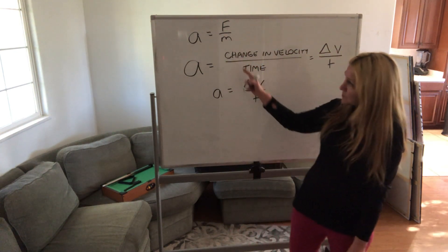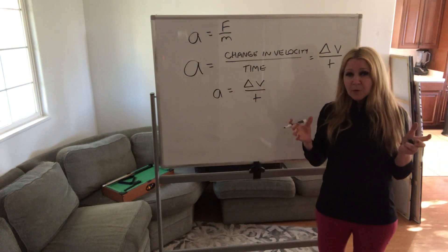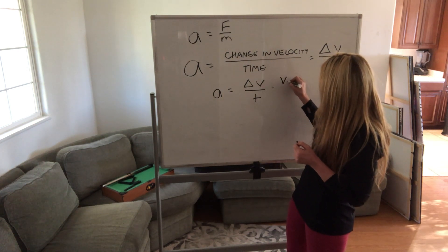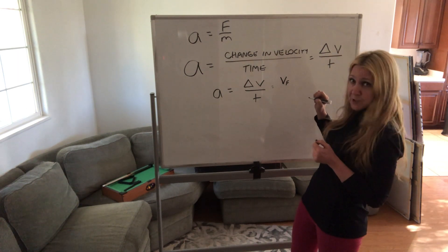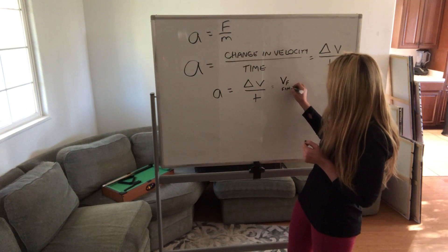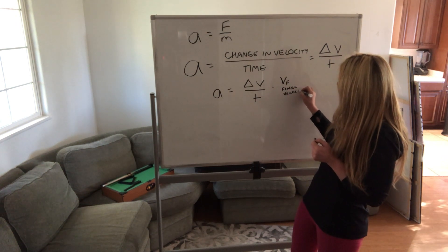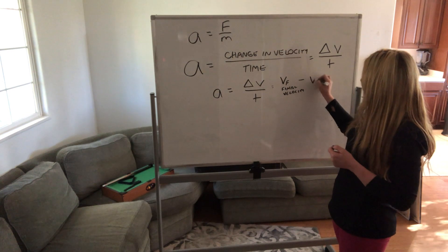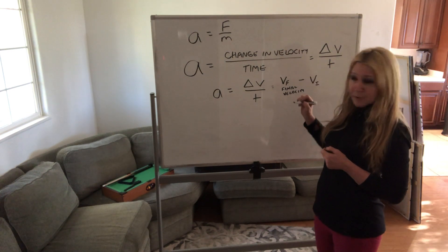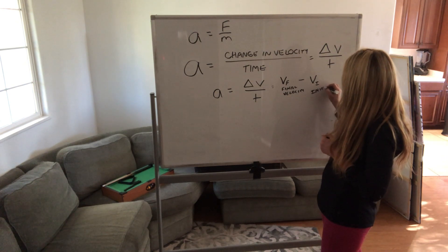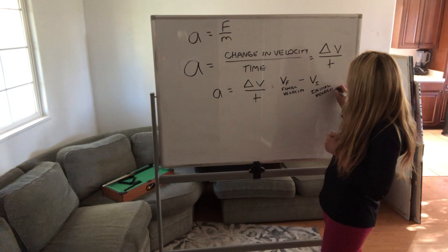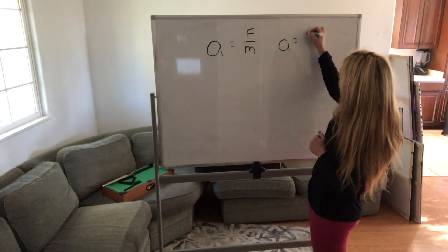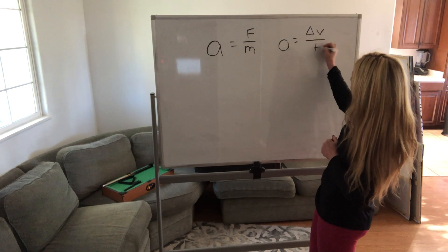So we have two formulas for acceleration. The change in velocity equals the final velocity (vf) minus the initial velocity (vi) — that's the velocity you start with. Acceleration equals force divided by mass, and it also equals the change in velocity over time, which is the final velocity minus the initial velocity.